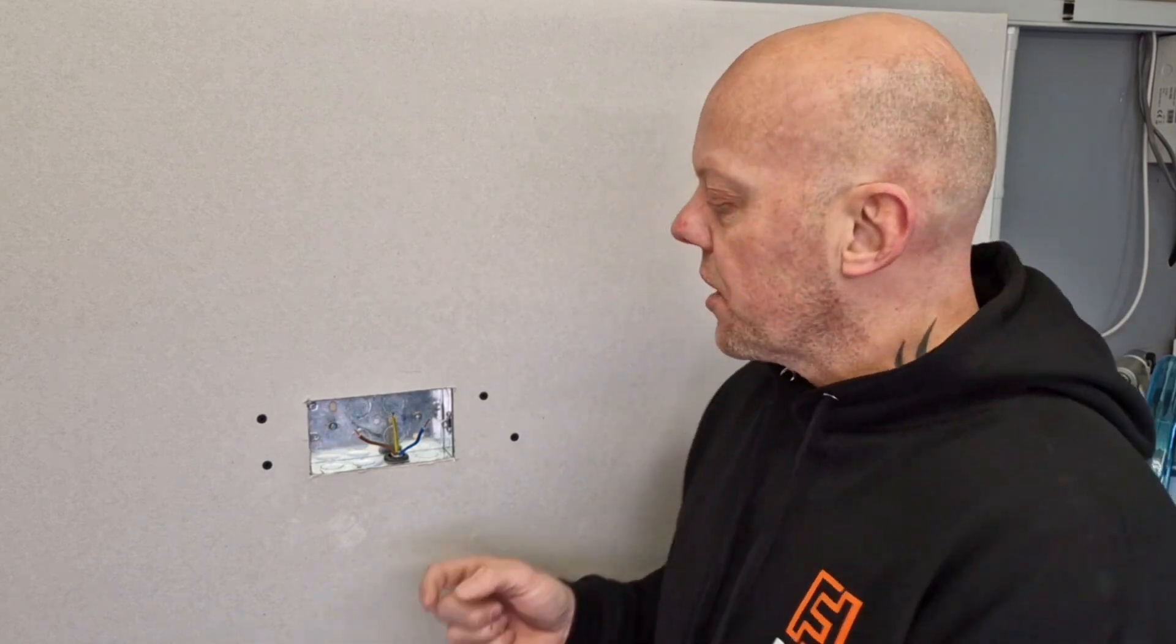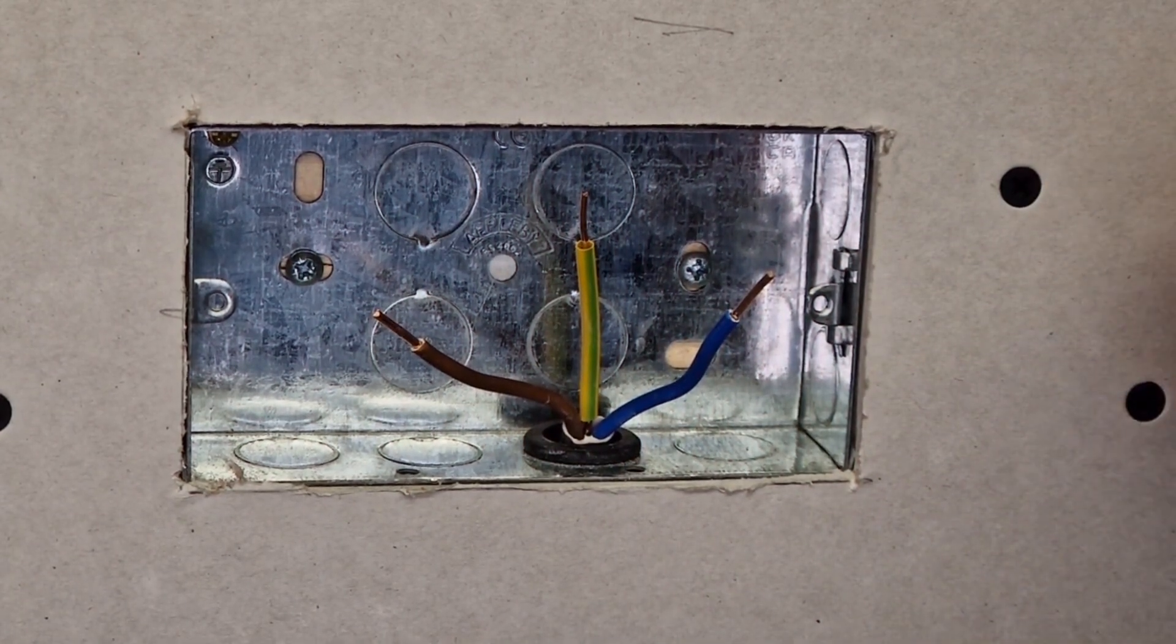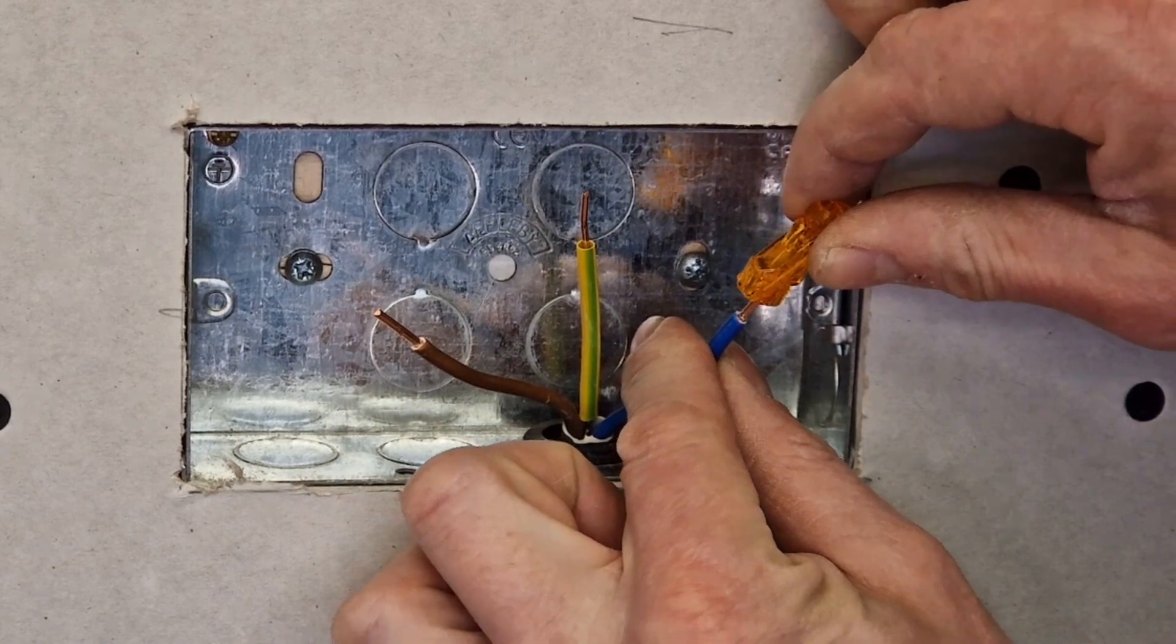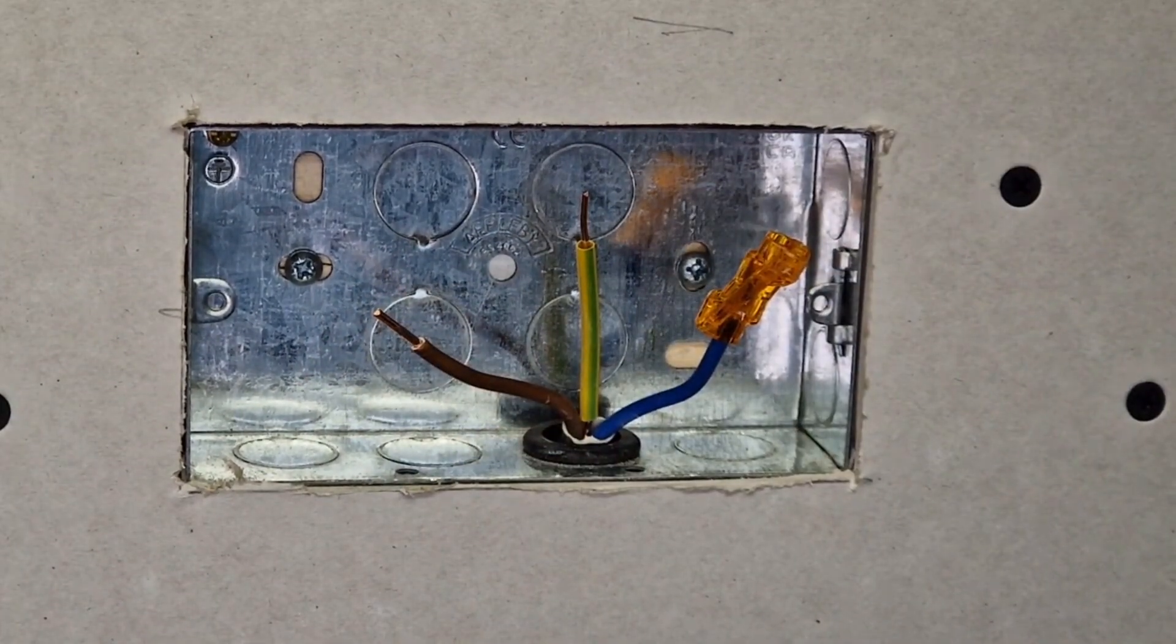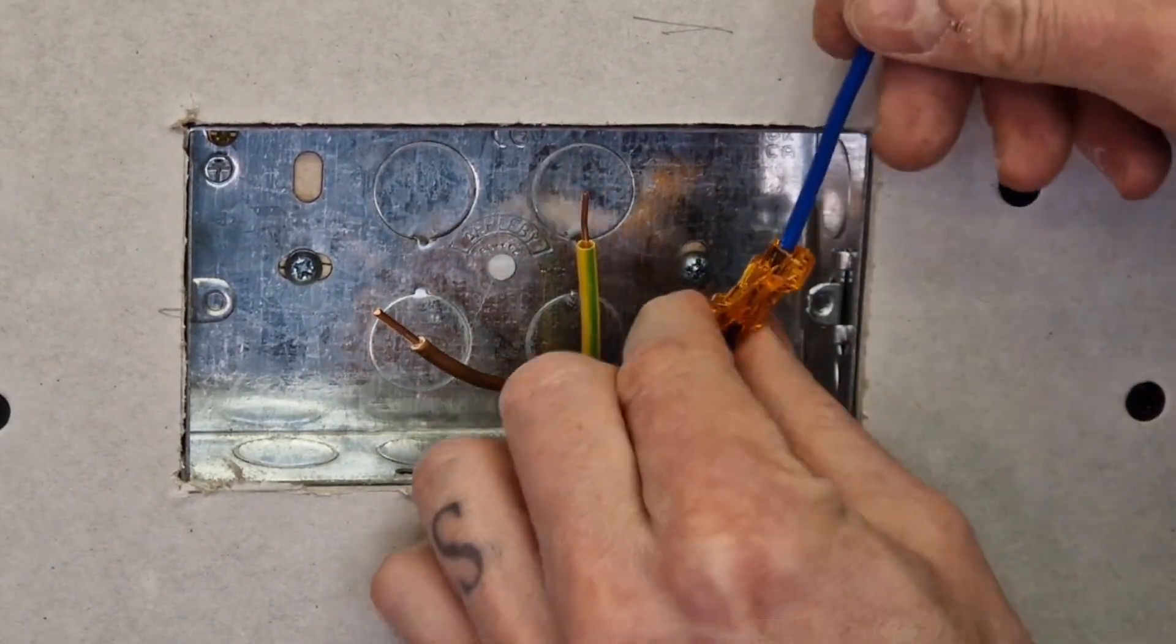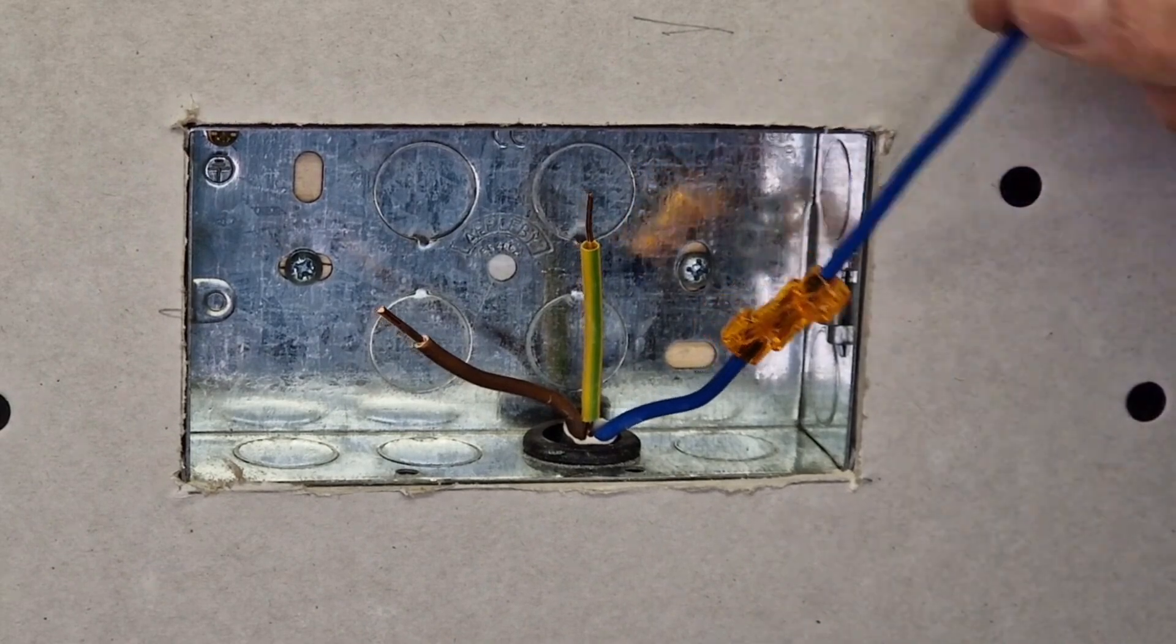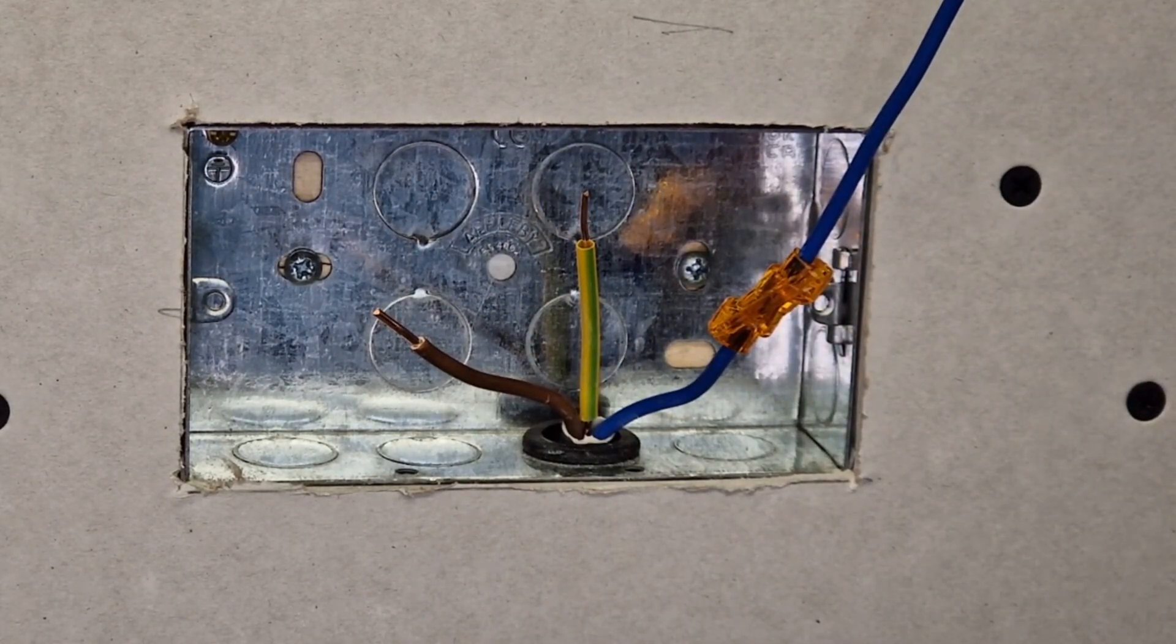We're just going to do the same sort of thing - we're going to get some offcuts of cable, strip them ready, and I'll show you how to install them. Same as before, if you just get your splice connector, these just push straight on. You can then get your offcut conductor to extend it, push that in, and that is as simple as it is. We just have to repeat that on the remaining conductors.